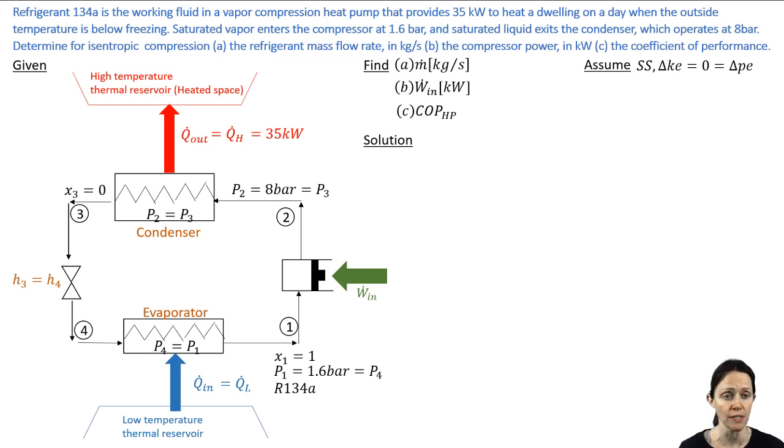Okay, so I'm going to get my governing equations here. My ṁ is going to be found from the only thing on that diagram that gives me anything about the rate. So it's Q̇_H divided by H_2 minus H_3. I got that by doing an energy balance on the condenser.